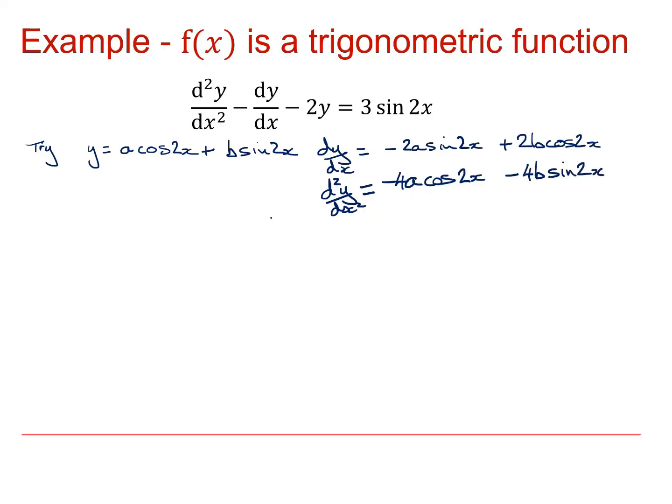So plugging those bits in from the second derivative, I'm going to get a minus 4a cos 2x and a minus 4b sine 2x. From the dy by dx, I'm going to get a minus 4a sine 2x plus 2b cos 2x. And then I'm going to get minus 2 lots of y, which is going to be a cos 2x plus b sine 2x. And all of that has got to be equal to 3 sine 2x.